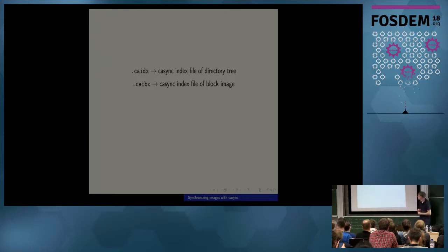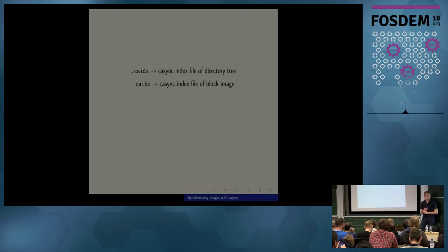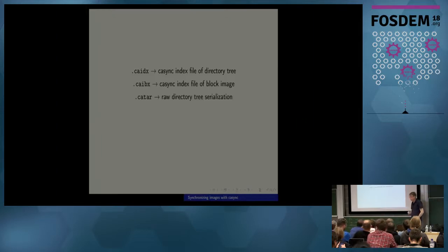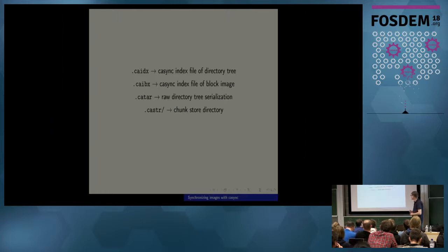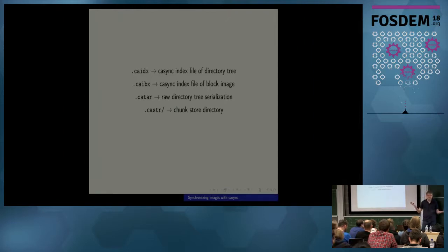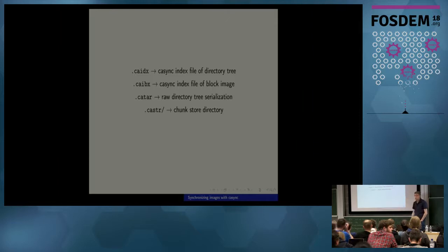When you actually play around with CAS sync you'll see a couple of different files. The primary one is .caidx — the index file — which is a list of hashes with the offsets and lengths of individual chunks. There's also .caibx, which is the same thing internally — the difference is only semantic: one is for the block level, the other for the file system level. .catar is essentially the same thing as tar except with reproducibility, random access, and these kinds of things. And there's a .castr which is a chunk store directory — not a file, a directory — where you'll see lots of little files all named after hashes.